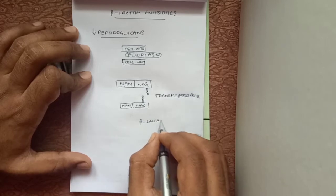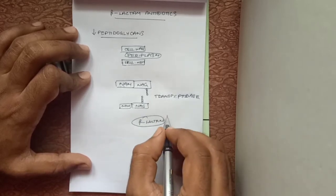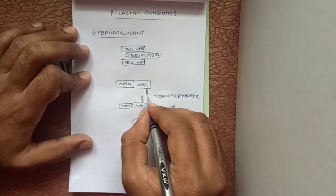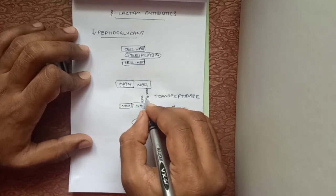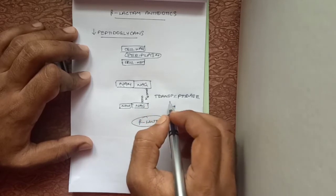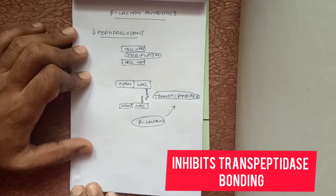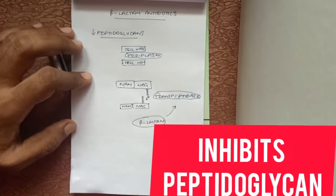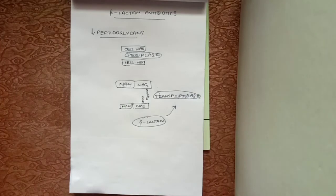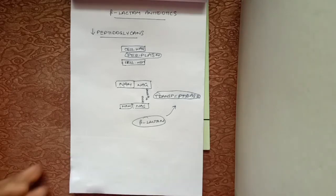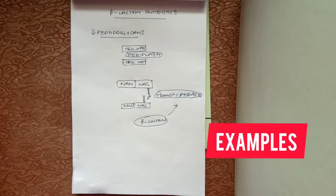Now what beta-lactam antibiotics do is they combine with transpeptidase enzyme and prevent the bonding between peptidoglycans and destroy the transpeptidase bond, thus inhibiting the action of peptidoglycans to form a stronger cell wall. Due to high internal pressure, the bacterial cell wall ruptures and the bactericidal action is provided by the beta-lactam antibiotics.